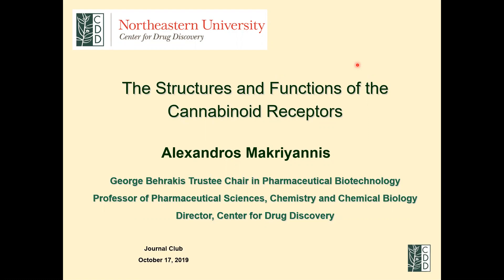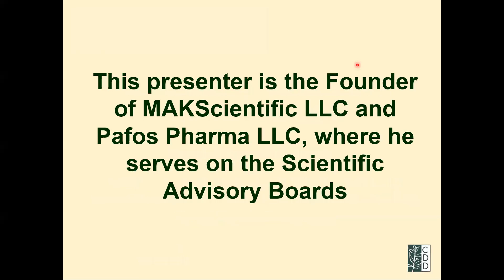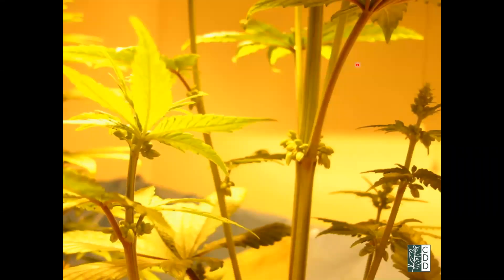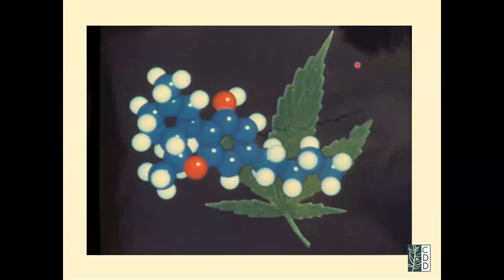I should also note that I'm a founder of MAC Scientific LLC and Pathos Pharma LLC, both licensed from the universities I've participated in — University of Connecticut and now Northeastern University — and we're in the process of developing new drugs. To start, the leaf is the symbol of what's going on, and the next important thing is delta-9-tetrahydrocannabinol, a terpene with a tricyclic ring and a tail. This is computationally determined and is an important part of the story.